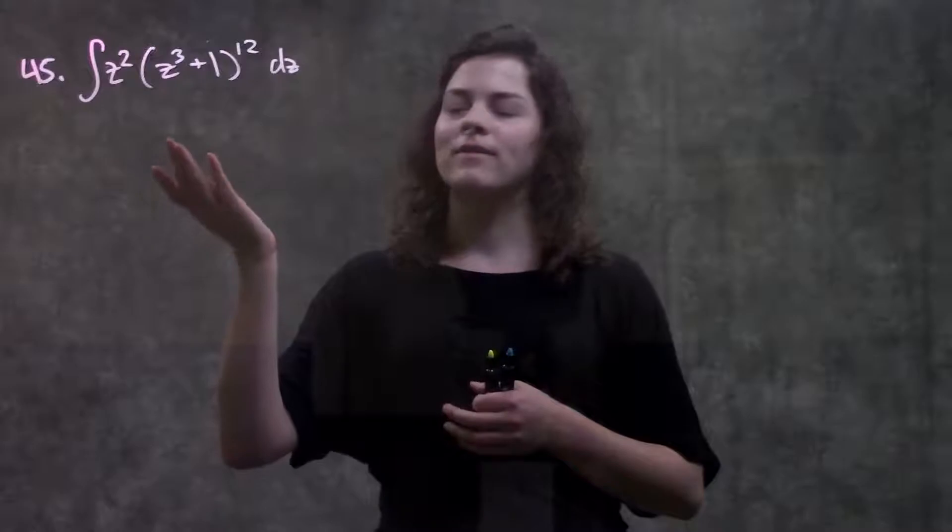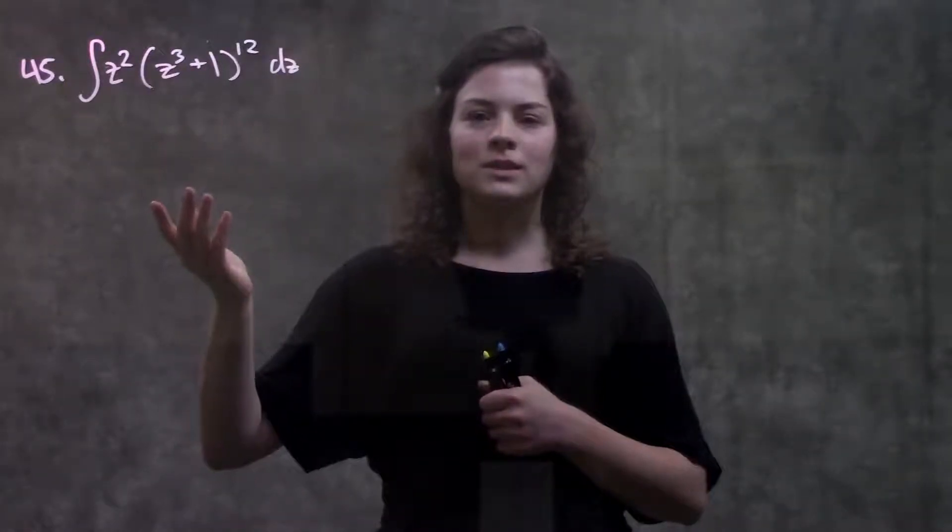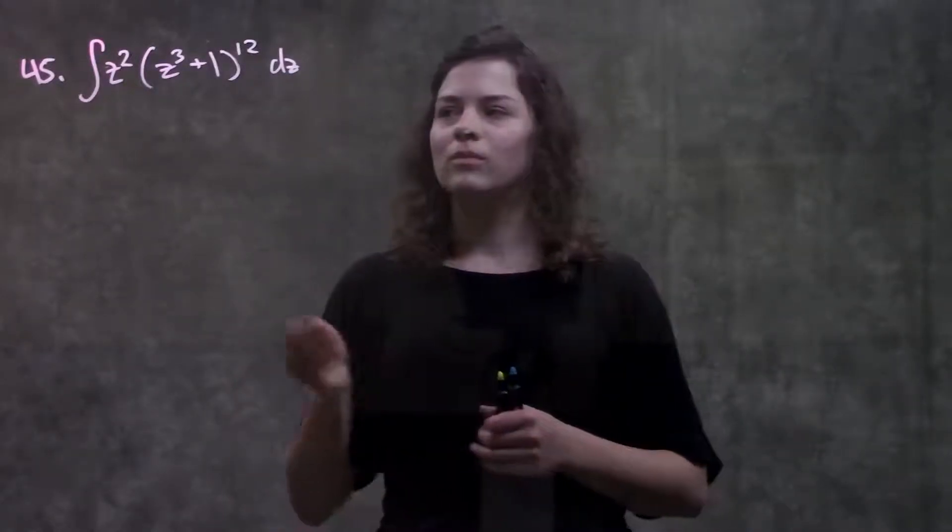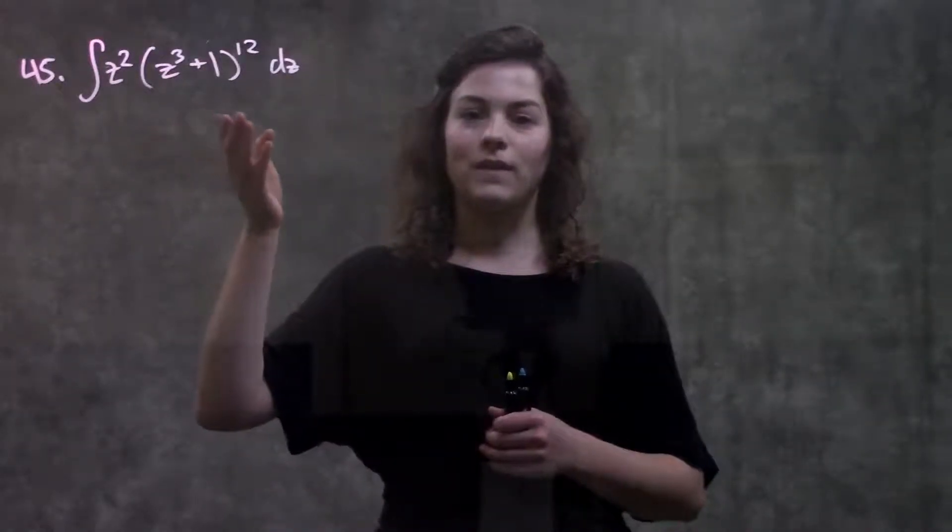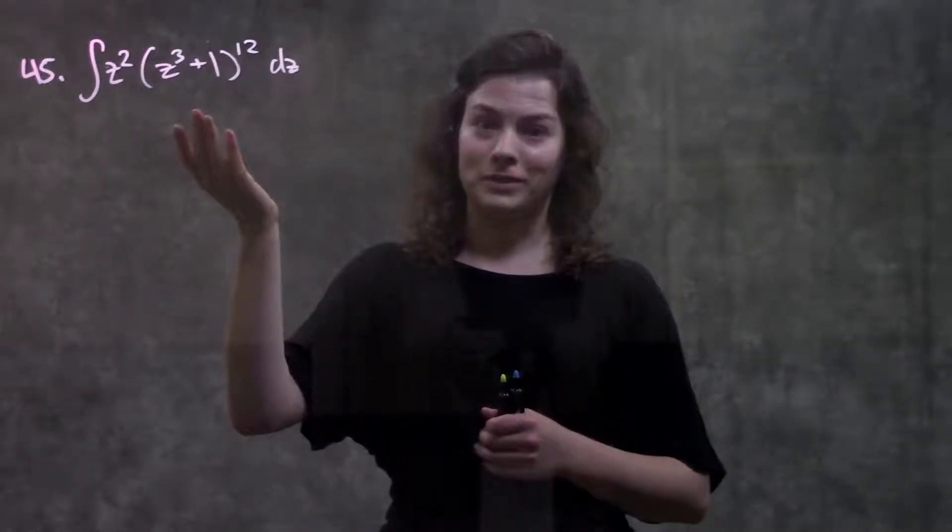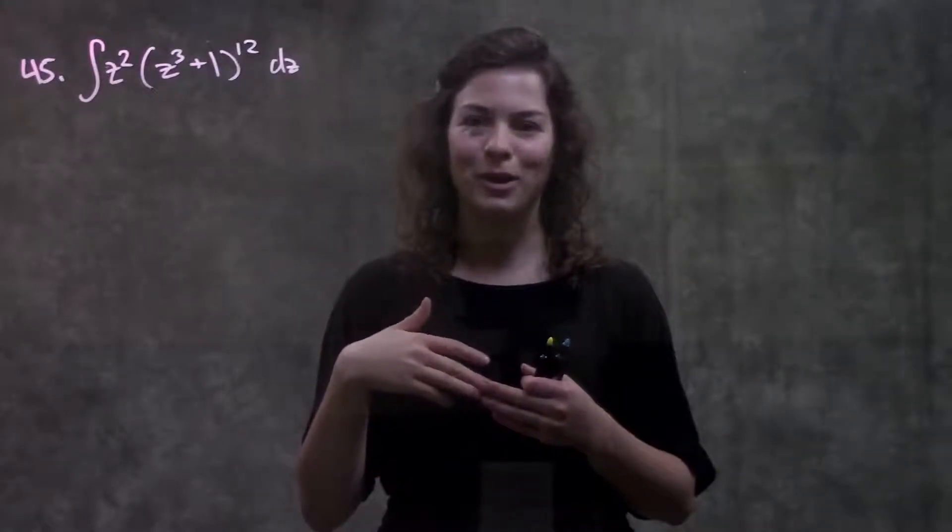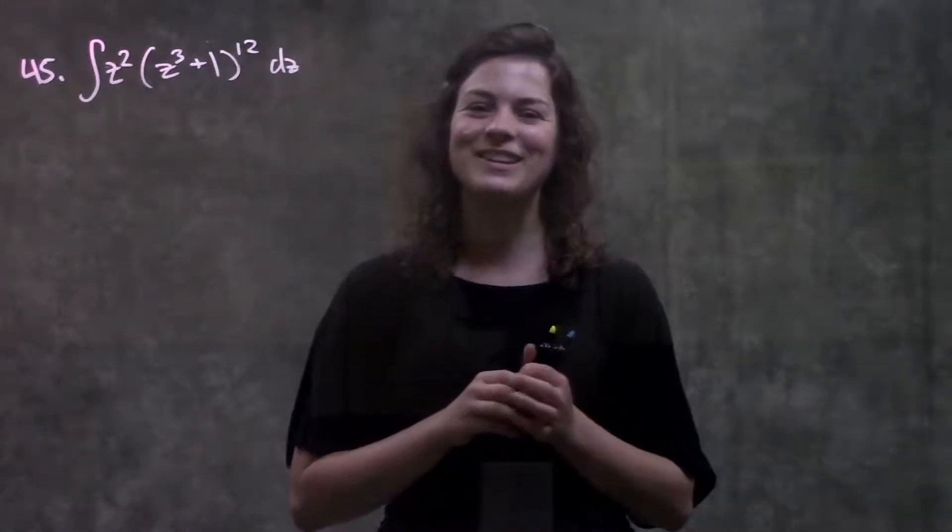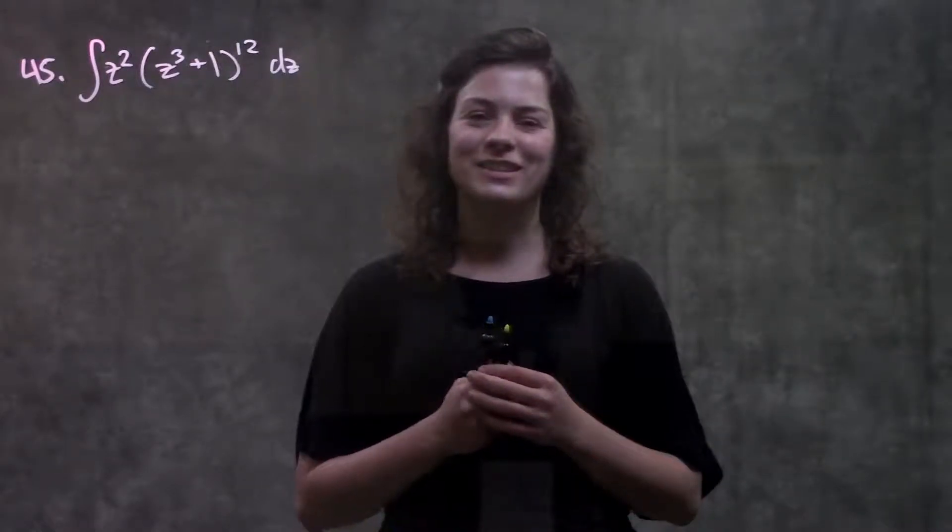So number 45, they're asking us to take the integral, but the first time we look at this function, we realize it's a little bit more complicated than other things we've done. We don't have any rules for how to take the integral of this function as it is. We could multiply this out 12 times and then add everything together and just use our regular power rule, but that sounds terrible. So instead, we're going to do the new thing that we learned in this section called u-sub.